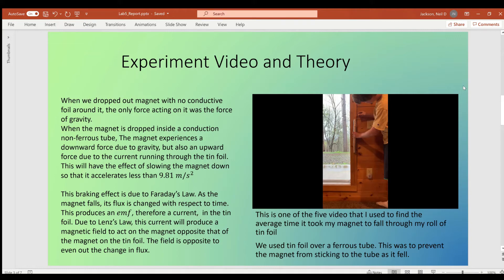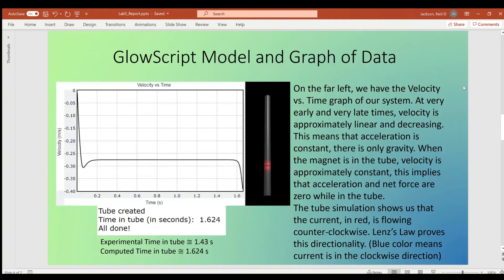Once I took all my videos, gathered all my data, and put everything into GlowScript, I came up with this model. On the left, we have this velocity versus time graph. As you can see, at very early and very late times, the graph is approximately linear, which is exactly what it should be. As the derivative of a linear graph is constant, derivative of velocity is acceleration. So acceleration is constant at these early and late times when the magnet is not in the tube.